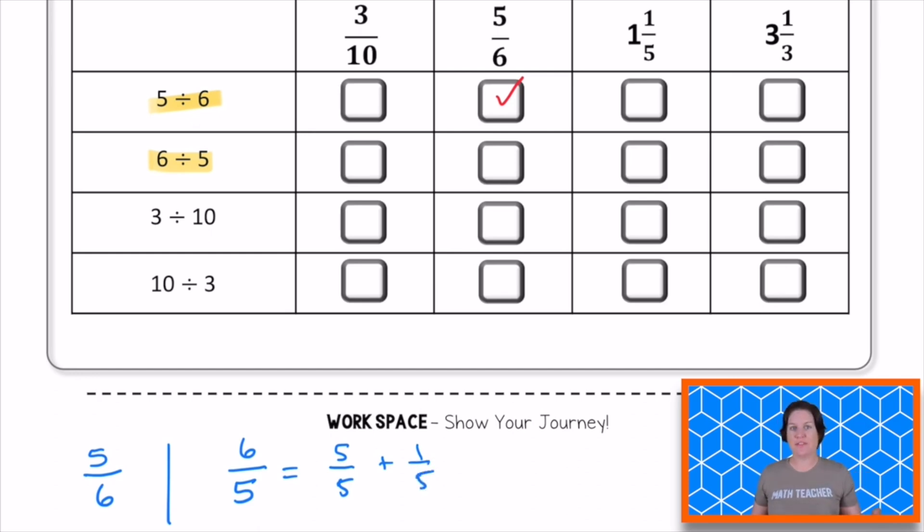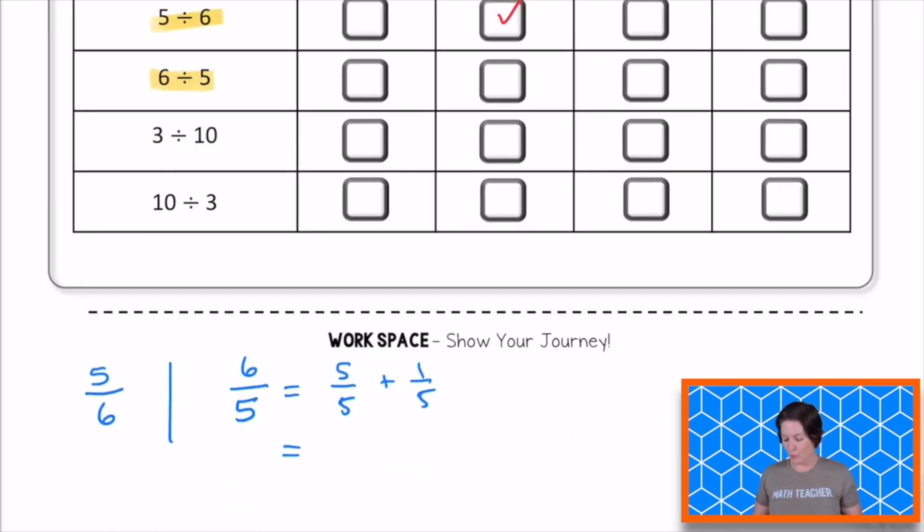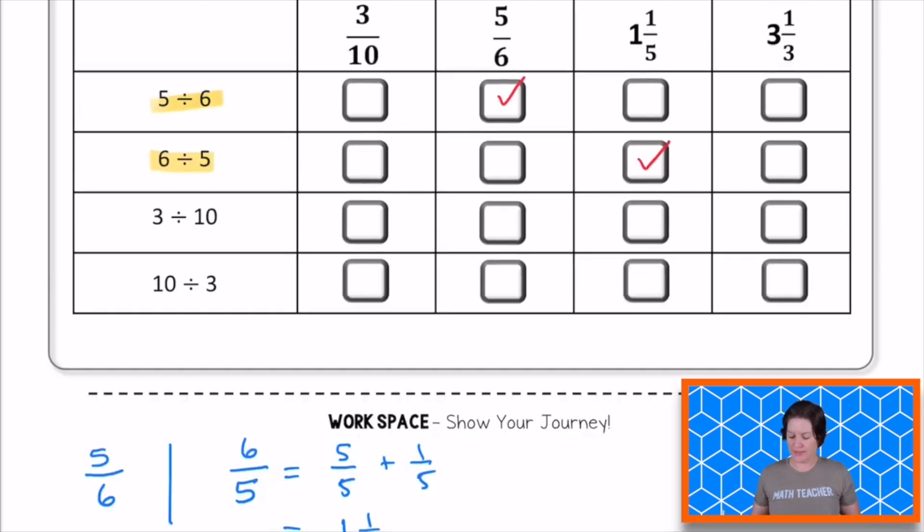And that's true because 6 fifths can be decomposed as 5 fifths plus 1 fifth. And 5 fifths is the same as what? 1 whole, right? So this would be equal to 1 whole and 1 fifth. That's how we get that answer.